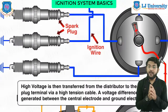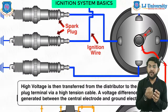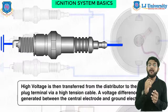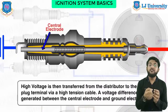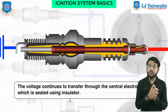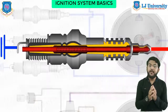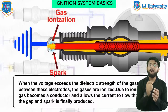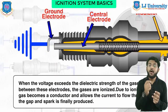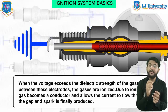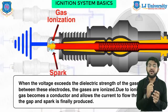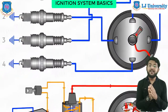Spark plugs used with petrol engines mainly consist of a central electrode and a metal tongue. The central electrode is covered by porcelain insulating material so voltage does not escape. Through the metal screw the spark plug is fitted in the cylinder head. When a high tension voltage of the order of 30,000 volts or more is applied across the spark electrodes, current jumps from one electrode to another producing a spark.